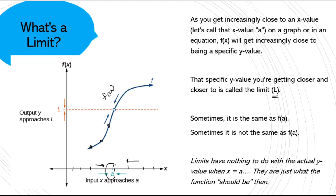Sometimes f(a) is the same as your limit — like this one won't be because it's got a hole — but if this was just nice and continuous, then your limit is going to be the same as the value of the function at a. But sometimes you get these discontinuities. Maybe this has a removable discontinuity, like a point, and f(a) is actually over here. In that case, f(a) is completely different than what you expect from the limit.